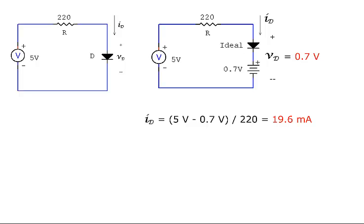With 0.7 volts across the diode, only 4.3 volts drop across the 220 ohm resistor. This gives us a current of 19.6 milliamps. This model is almost as fast as the ideal diode model, but it's much more accurate. It is, in fact, the most commonly used diode model.